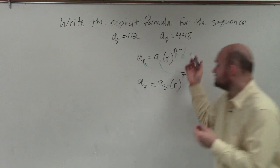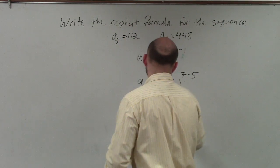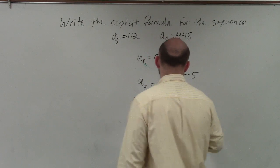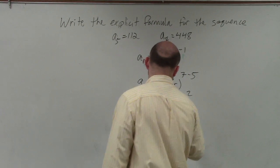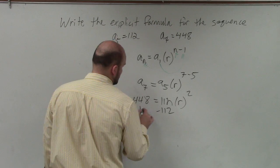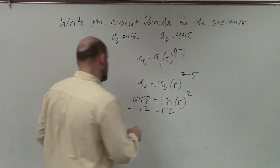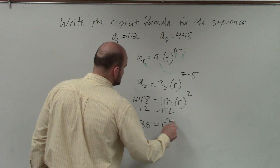Now, do we know what a_7 is? Yeah, 448. a_5 is 112. Times r, 7 minus 5 is 2, so r squared. So I subtract 112, and when I subtract 112, I get 336 equals r squared.